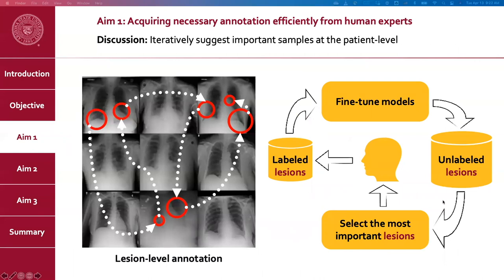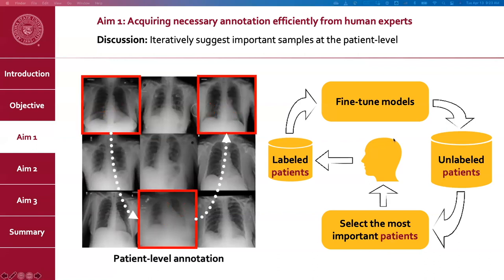A limitation is that the current active learning procedure can only suggest the most important lesion at each step. If a patient has multiple lesions, the active procedure might suggest annotating the same patient multiple times, each time on a different lesion, requiring human experts to repeatedly go through the same patient — which is inefficient. What we wish to accomplish is to select at the patient level: by transitioning from lesion-level to patient-level annotation, doctors can go through a patient only once and annotate all diseases simultaneously.